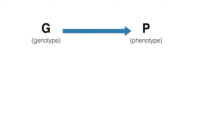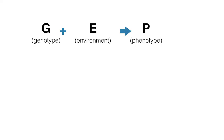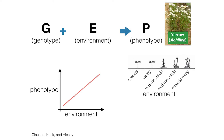Getting back to our genotype-phenotype relationship, it's not just this simple. The way you look does not depend only on your genotype. If you have long hair and get a haircut, you're going to look totally different. You go out in the sun, get a tan — you're going to look totally different. Environment is very important.